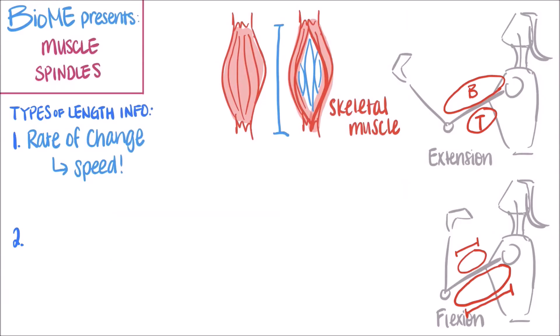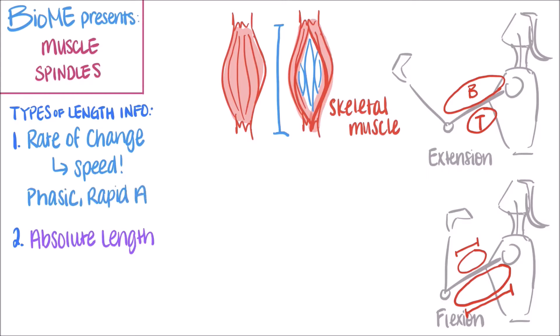The second type of information is absolute length — this is about the actual length of the muscle. How long or short is the muscle right now? For example, if the bicep is longer than the triceps, your brain knows that your forearm is extended. In order to detect these two different types of information, muscle spindles are comprised of different sensory nerve fibers. You may know that receptors send information to your central nervous system by firing action potentials, while sensory receptors are capable of adapting to constant stimuli by decreasing the amount of signals sent to the brain. So for detecting rate of change, you have phasic rapid adapting receptors. These adapt very quickly to constant stimuli, and their action potentials immediately slow down as soon as the stimulus becomes constant.